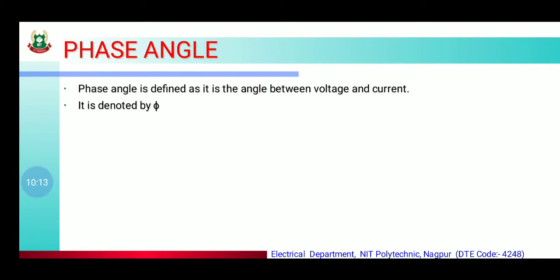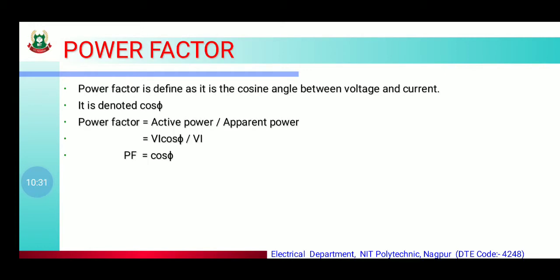Next is phase angle. Phase angle is the angle between voltage and current — voltage and current के बीच वाले angle को हम phase angle बोलते हैं, और उसको φ से note down करते हैं। Power factor को cosφ से note down करते हैं — it is the cosine of the angle between voltage and current. Power factor = active power / apparent power = VI cosφ / VI = cosφ।